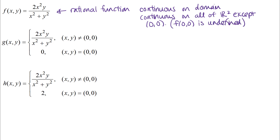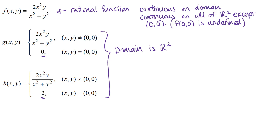These other two functions are piecewise defined so that the domain of both includes all of ℝ². We use the rational function — which is defined everywhere except the origin — and then g and h are both piecewise defined so they have a different output when (x,y) equals (0,0). Since the functions are defined everywhere, f(x,y) exists at all points in ℝ², and what I need to think about is the limit as (x,y) approaches (0,0).